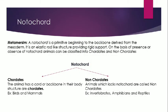The next parameter is the notochord, basically the backbone. A notochord is a primitive beginning of the backbone derived from the mesoderm. In humans, it is the extension of the medulla of the brain through the neural canal up to the lumbar region — a rod-like structure providing support to the body. On the basis of the notochord, animals are divided into chordates and non-chordates. Chordates include those animals which have a backbone — for example, birds and mammals. Those lacking the notochord are non-chordates — for example, invertebrates, amphibians, and reptiles.